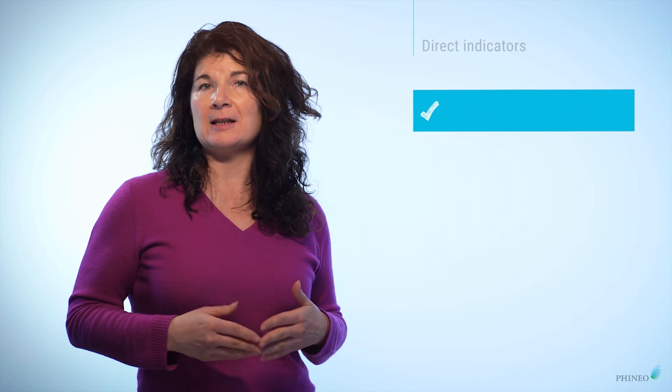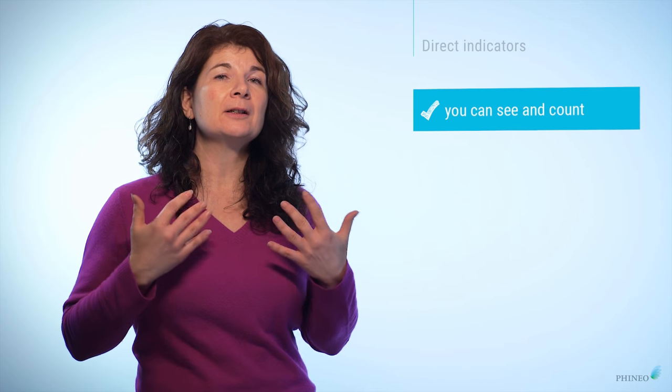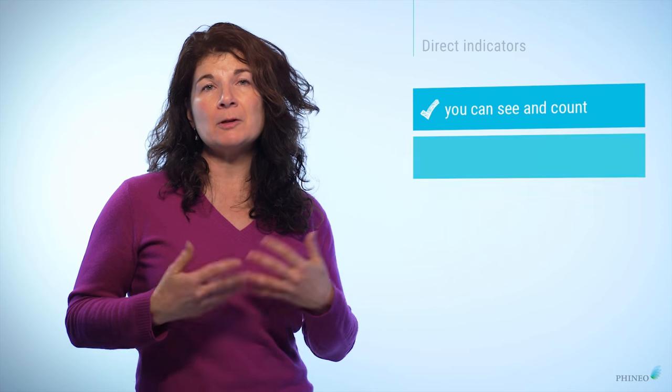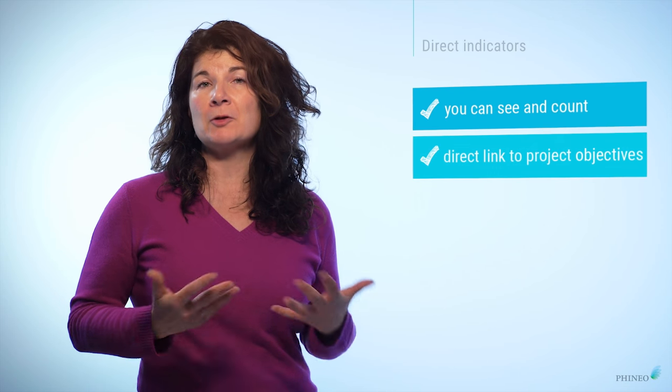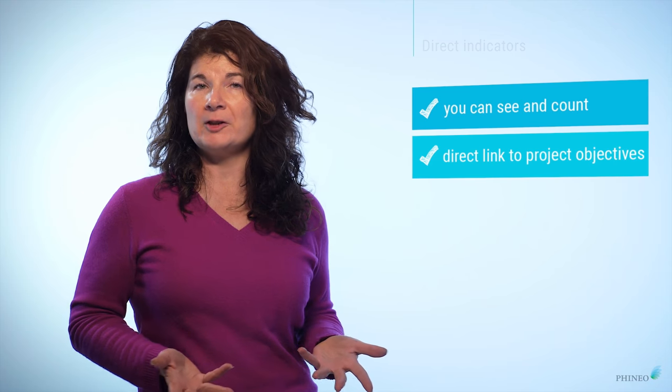There are two types of indicators: direct and indirect. Direct indicators are things that you can see and count. For example, if you have an education project, you may want to know how many of your participants have secured an apprenticeship.